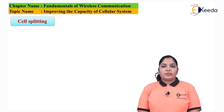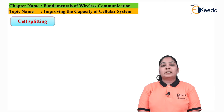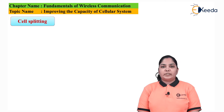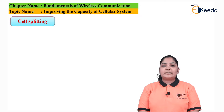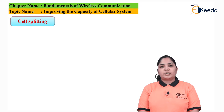Capacity is given by M × K × N, which equals M × S, where M is the number of clusters. In cell splitting, we divide the cell to say half the radius. The size of the cell reduces, and hence the number of cells required to cover the entire geographical area increases, which means the number of clusters increases. Initially, say I had seven cells in a cluster; because of the reduced cell size, more clusters are required to cover the entire geographical area.